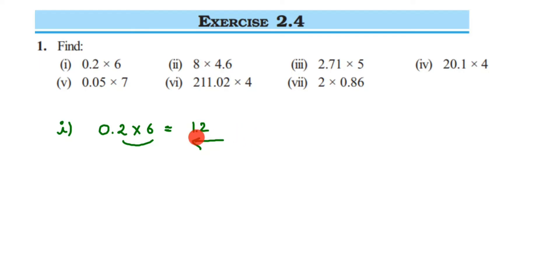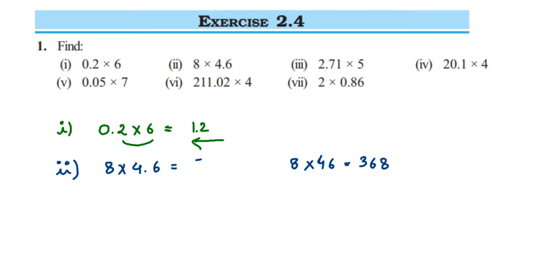The second one is 8 × 4.6. Just multiply 8 and 46: 8 × 46 = 368. After the decimal we have only one digit, so from the right side, after one digit — starting from 8 — we place the decimal. The answer is 36.8.